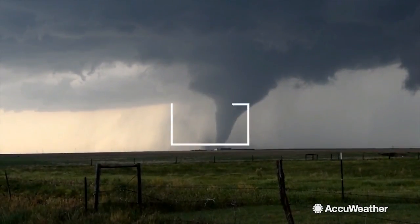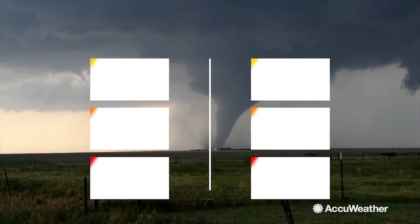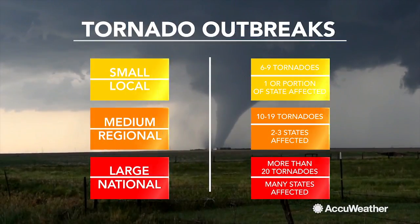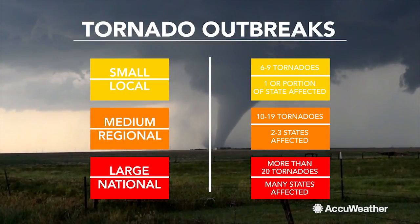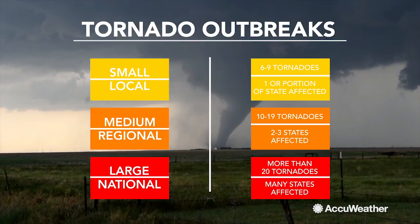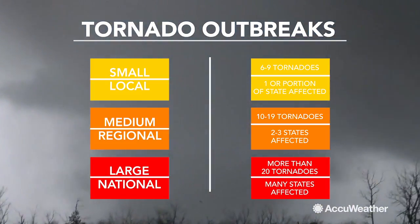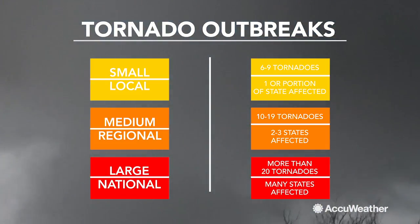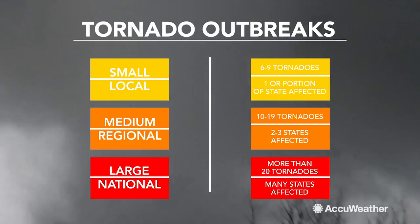Tornado outbreaks can be classified in the following categories: local, regional, and national, as well as small, medium, or large. They're based on how many tornadoes are produced and how many states are affected.